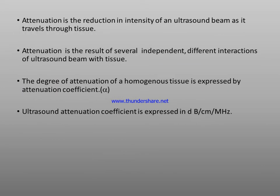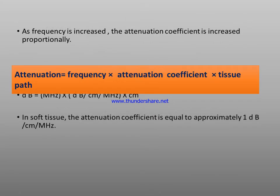Firstly, attenuation. Attenuation is the reduction in intensity of an ultrasound beam as it travels through tissue. When it travels through any type of material or tissue, the intensity of the beam is reduced. It is a result of several independent interactions of the ultrasound beam with tissues. The degree of attenuation of a homogeneous tissue is expressed by the attenuation coefficient, expressed in decibels per centimeter per megahertz. As frequency increases, the attenuation coefficient increases. Attenuation equals frequency multiplied by the attenuation coefficient and tissue path length.